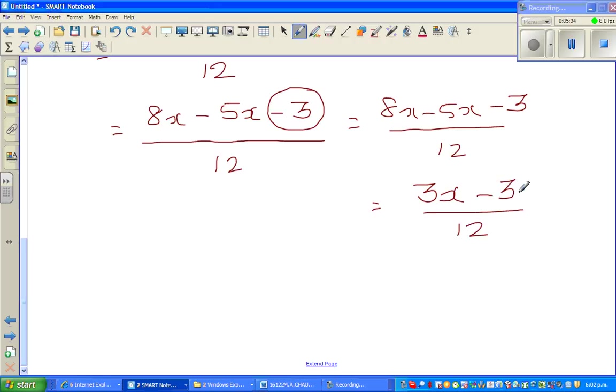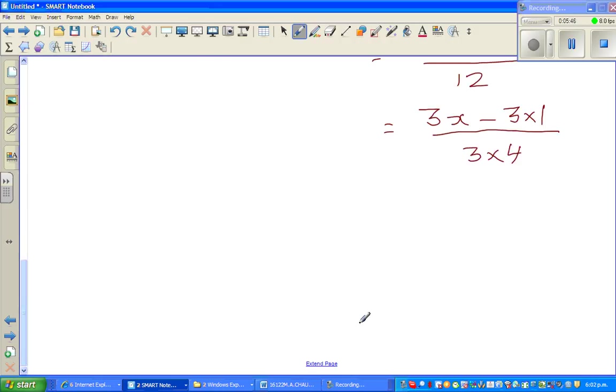Now what can you factor out here? I'm going to do one more step. Can I write 3x minus 3 times 1 over 3 times 4? What can you factor out? You've got a 3 sitting here and a 3 sitting here. So if you factor out a 3, you'll have x minus 1 over 3 times 4. Just like that, so this 3 and this 3 can be cancelled. And this is your ultimate answer: x minus 1 over 4.